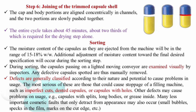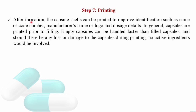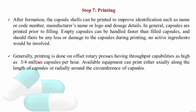Step 8: Printing. After formation, capsule shells can be printed to show identification details such as name, code number, manufacturer name or logo, and design details. Capsules are generally printed prior to filling because empty capsules are easier and faster to handle than filled ones. If there is any loss or damage during printing, the empty capsules can be rejected without any wastage of active ingredient. Printing is done on offset rotary presses with throughput capabilities of up to 3 to 4 million capsules per hour, and can print axially (along the length) or radially (around the circumference) of the capsules.